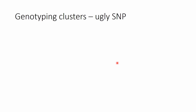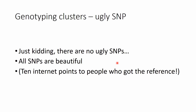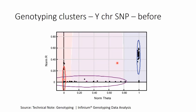And then there are the examples of the so-called ugly SNPs — which is of course just a joke, because all SNPs are beautiful. Ten internet points if you recognize this reference. To the more serious matters: we also have SNPs like this which at first sight look like a disaster because the call areas for one of the homozygous and one of the heterozygous SNPs are clearly overlapping. But this is just because we are now speaking about Y chromosomes — in males only, they have it in a single copy, and in birds, for example, only the females have it in a single copy.